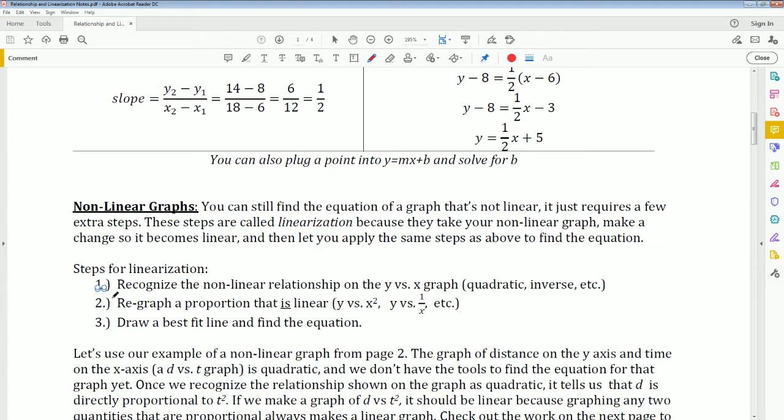One, recognize that the nonlinear relationship on the y and x graph is either quadratic, inverse, or etc. The most common parts: quadratic looks like a parabola, the inverse might look like this, or the square root looks like this. These are your three common ones in physics. Then you're going to re-graph it based on its proportionality. Then you're going to draw a line of best fit then find the equation. This is a unique skill that you have to learn. But again, linearization is the process of taking a nonlinear graph and making it linear. And there's no thinking involved here, it is all memorization.